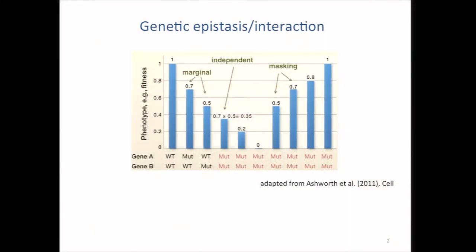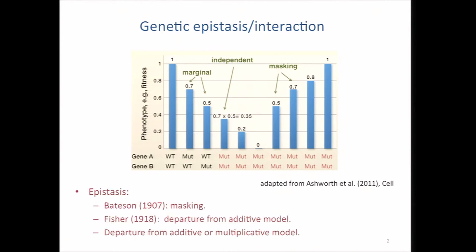In particular, if we look at these two cases, they're identical to one of the single mutants, and these are called masking. Masking was initially referred to as epistasis by Bateson more than a century ago. A few years later, Fisher extended this concept to departure from an additive model. In our project, we define epistasis as departure from an additive or multiplicative model.